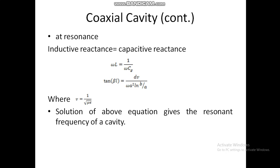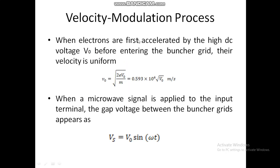Now, the velocity modulation process: when electrons are first accelerated by the high DC voltage V₀ before entering the buncher grid, their velocity — as discussed in the last lecture — is v₀ = √(2eV₀/m), where e is the charge of the electron, V₀ is the DC voltage, and m is the mass of the electron. By substituting the values of e and m, this becomes 0.593×10⁶ × √V₀ m/s.